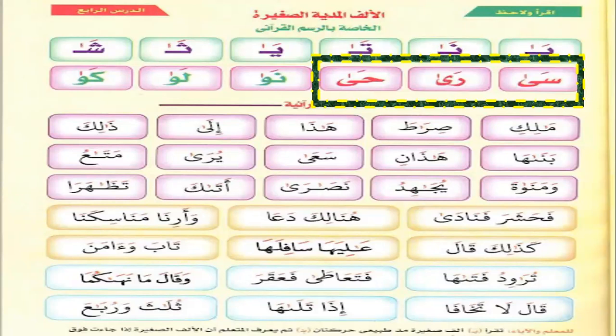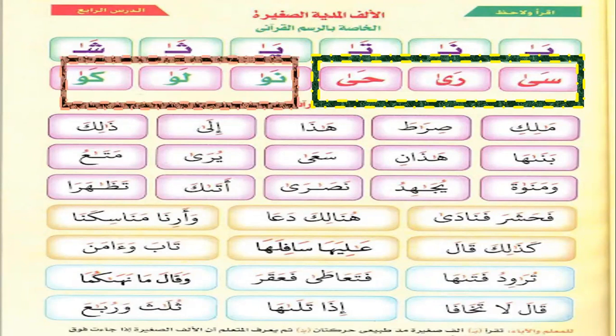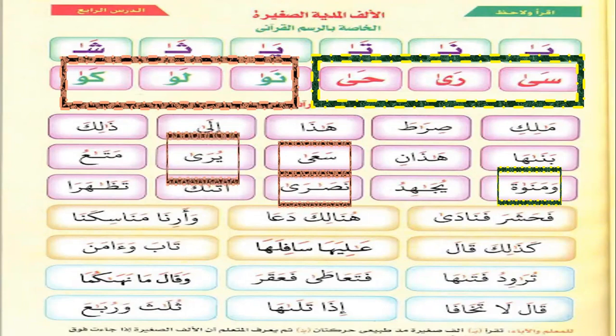Can you see? The small alif mad is above ya — like this. And above waw — like this. For example, small alif mad above waw, like in 'wa manata.' And above ya, like in 'ta'ar,' 'nasara.' Please repeat. Look at the word underneath: 'yura.'